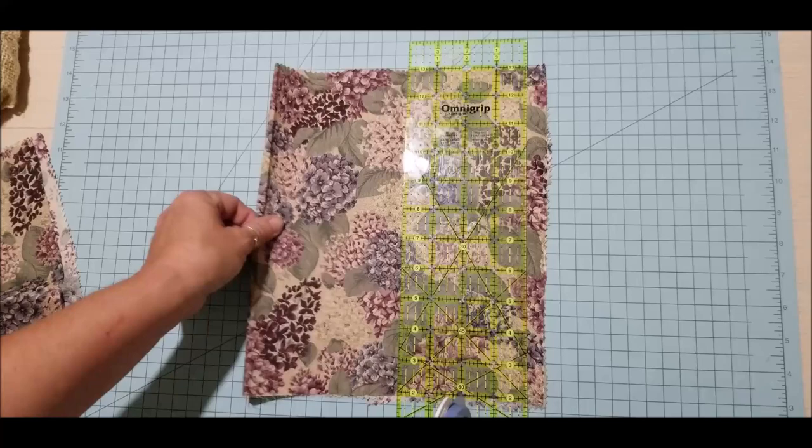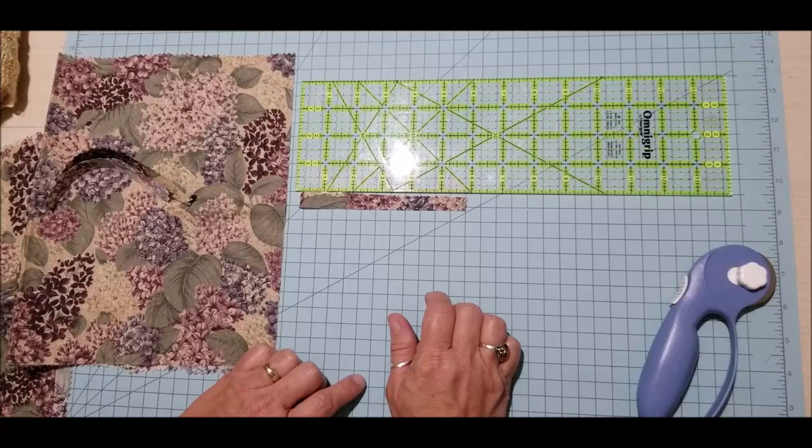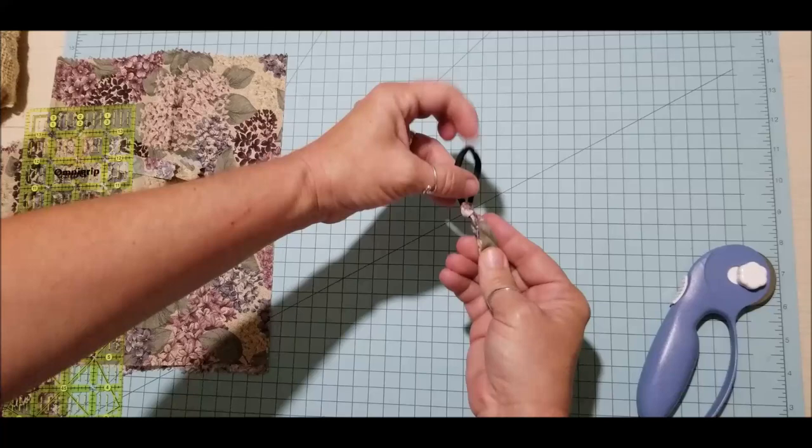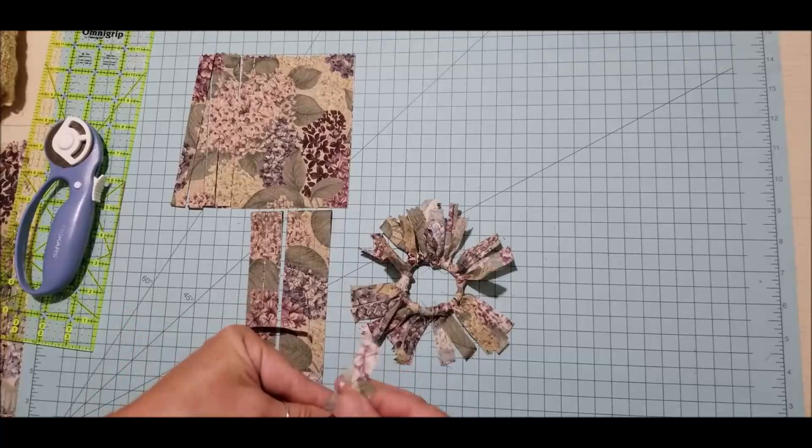The raggier the better. Simply tie those onto the ponytail holder using a lark's head knot or cow hitch knot. It took about 23 to fill this ponytail, but some will take more, some will take less.